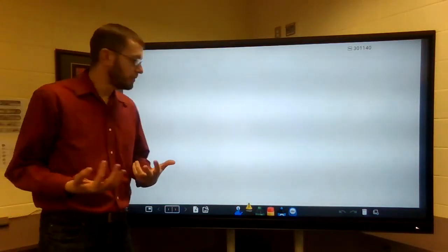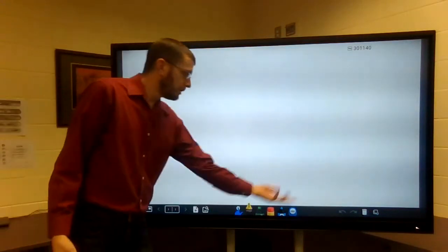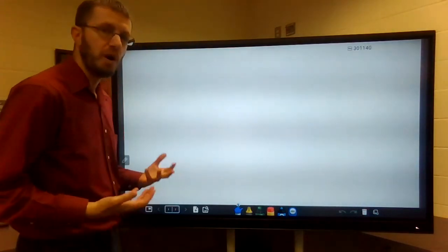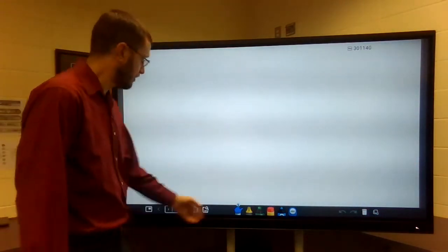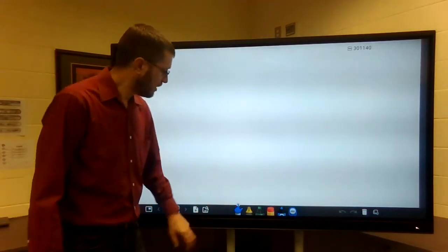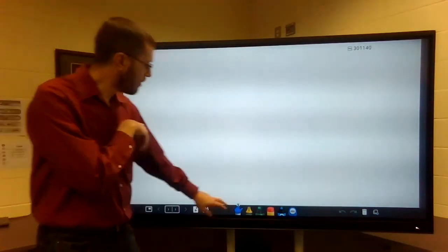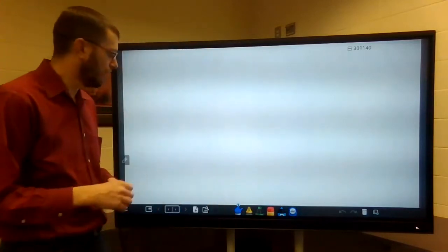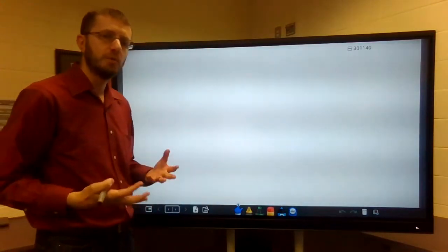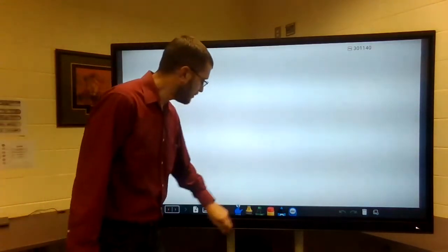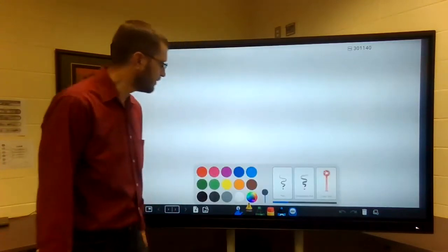And we have our basic whiteboard. So you have all your options along the bottom here. So let's just start with the whiteboard tools specifically. So looking from left to right, we have our selection option, which you're really not going to notice what that does unless you write on the whiteboard. So let's go ahead and write something on the whiteboard.